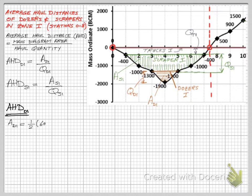The mass diagram area of the dozers equal the area of the hatched symmetrical triangle with a base 200 meters and mass-ordinate height of 600 meters.